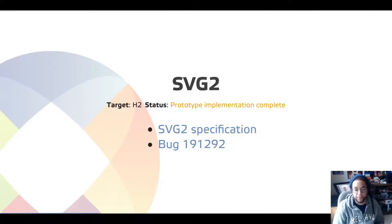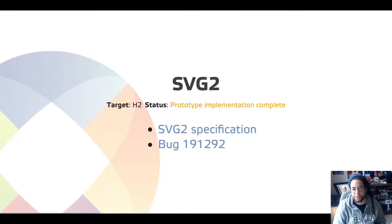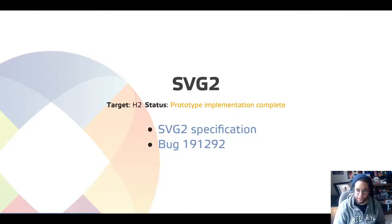We've got a complete prototype at the moment with no SVG test regressions and only a small handful of regressions outside of SVG. We're hoping to address these issues and submit a patch upstream soon, with a completion target of the second half of the year.